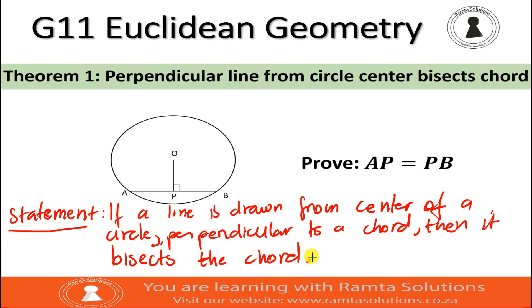So, let's read it out first. If a line is drawn from center of a circle, perpendicular to a chord, then it bisects the chord. Remember, to bisect means to cut into two equal halves.